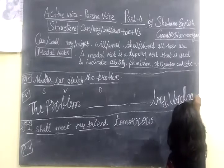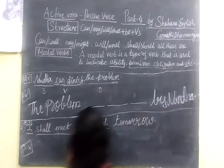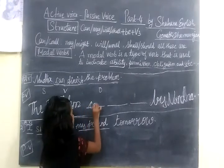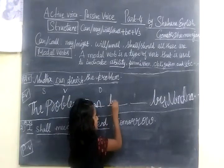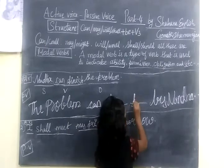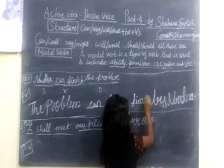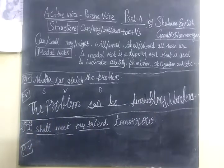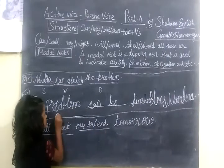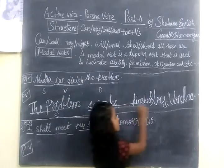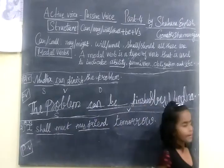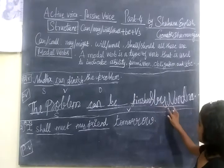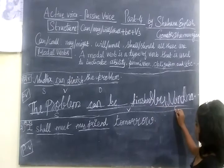For example: 'The problem can be finished by Nanda.' In this structure, 'the problem' is the subject, 'can be finished' is the verb, and 'by Nanda' — where Nanda is the object.